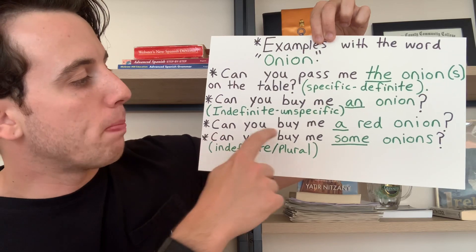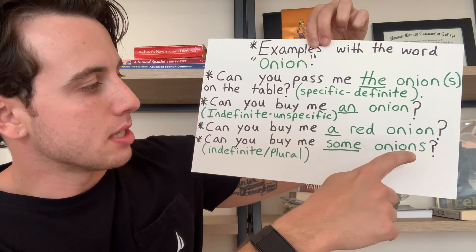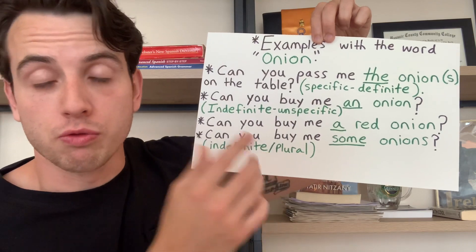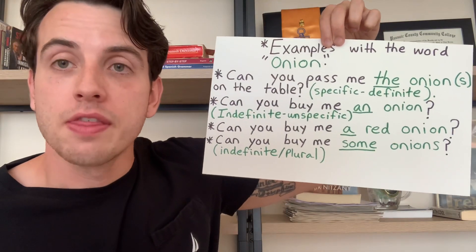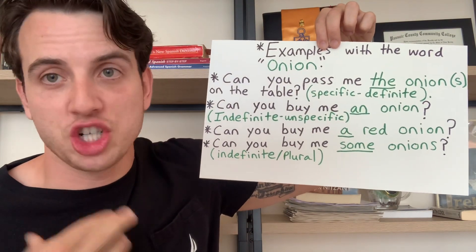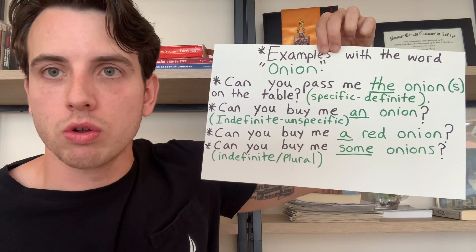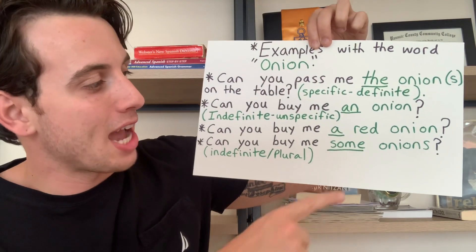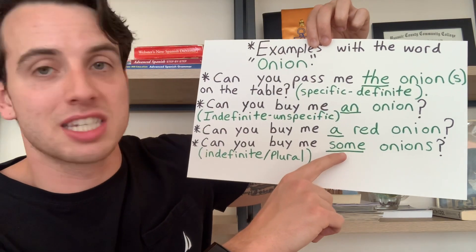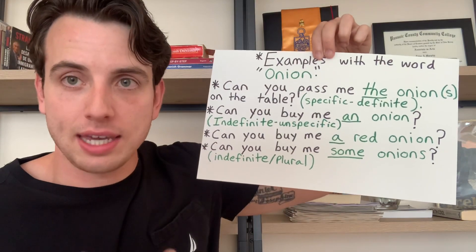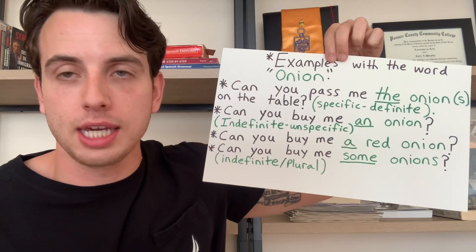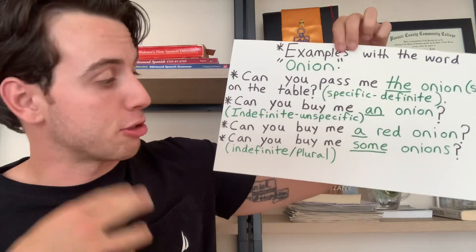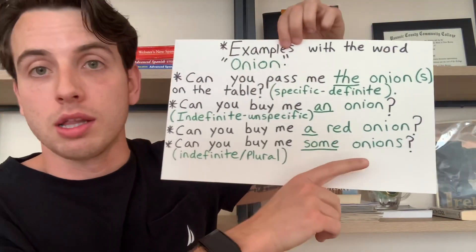Can you buy me some onions? That's indefinite and plural. Remember, with indefinite or general articles, 'a/an' is only used singularly, but we can use the word 'some' to still speak indefinitely in general and refer to something that is plural, like onions.